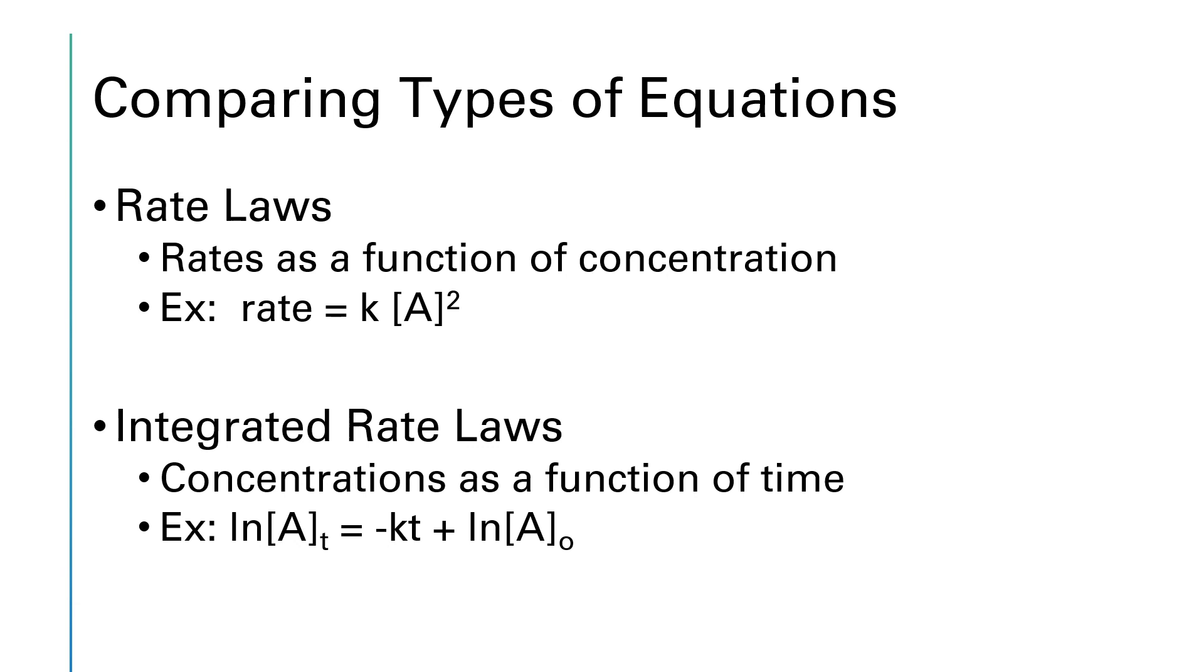Let's compare the information that is contained in the equation for a rate law versus the equation for an integrated rate law. In a rate law, our equation will say rate is equal to k[A] squared. For instance, it doesn't have to be squared. The orders can be different numbers, but that's just an example. So what we are seeing in a rate law is an equation that tells us what the rate is as a function of concentration. In the integrated rate law, it gets to be a little bit more complicated because now we have introduced time. And so the integrated rate laws give us information about the concentration as a function of time. The rate itself doesn't actually appear in an integrated rate law. Instead, we have concentration and time.